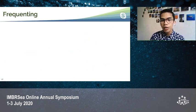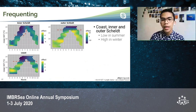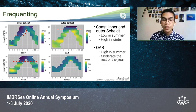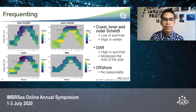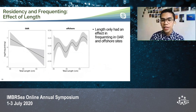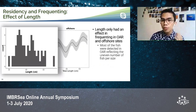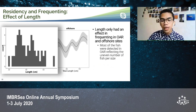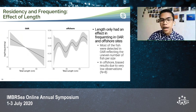Similarly, frequenting followed the same pattern. For Coast, Inner, and Outer Scheldt, frequenting was low during summer and high during winter. In offshore artificial reefs, it was high in summer and moderate the rest of the year. There was also no seasonality found in offshore sites. Regarding the effect of length, it only had a significant effect in frequenting at offshore artificial reefs and offshore sites. The downward relationship seen in OAR sites could reflect the uneven distribution of fish size, since most fish tagged in different studies were found in offshore artificial reef sites. The undulating pattern found in offshore sites could be biased, since the number of observations was very low.